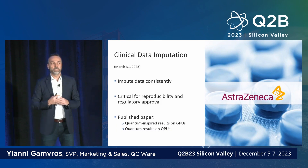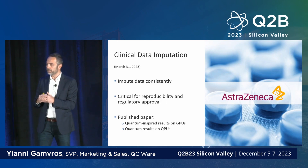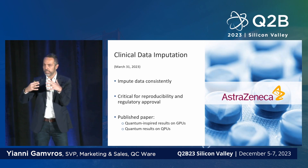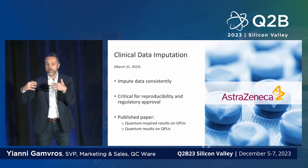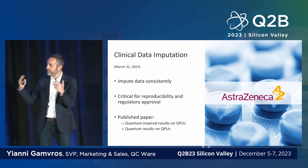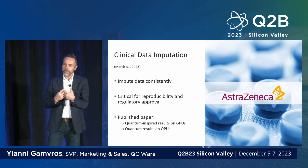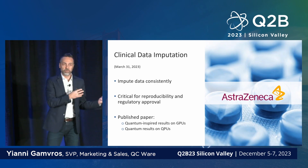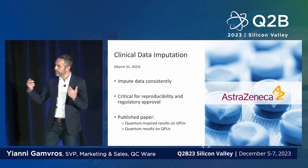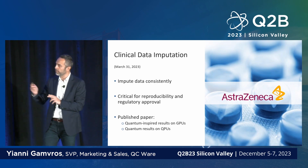Here's another large pharmaceutical customer, AstraZeneca. We looked at filling in data from clinical trials — trials where many participants fall out before completing all steps, leaving gaps in the data. AstraZeneca wanted to fill in this data responsibly, with the help of auditors and regulators, in order to run experiments and create insights. We helped them do that using quantum neural networks, and this work has been published in a paper with AstraZeneca.